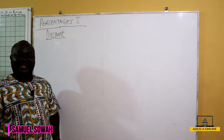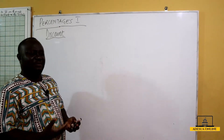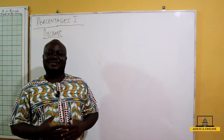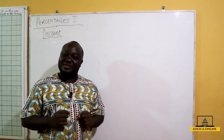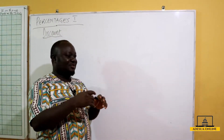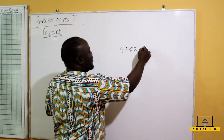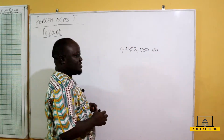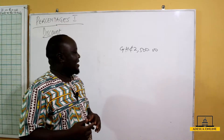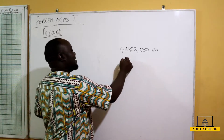We are going to continue with discounts. Assuming I walk into Melcom and I see a TV set — a beautiful flat screen TV — and the marked price on it is 2500 Ghana cedis cash. There is a promotion going on and the promotion says there is a 10% discount on this product.